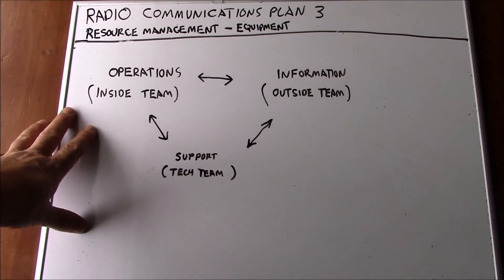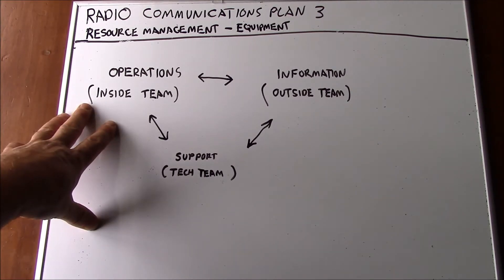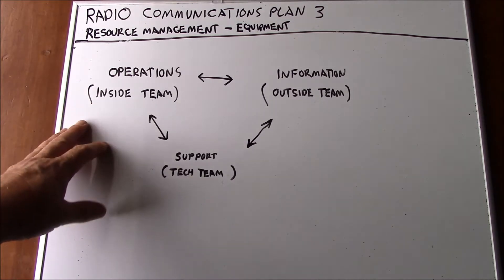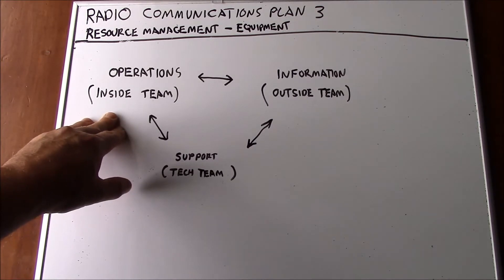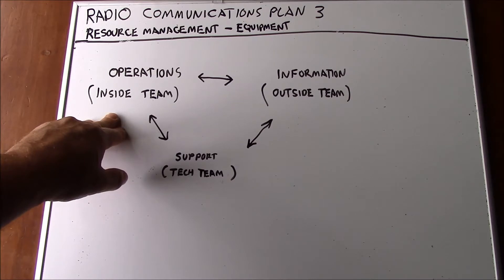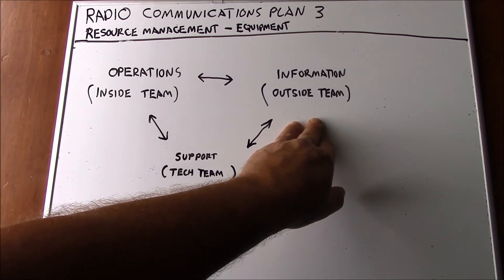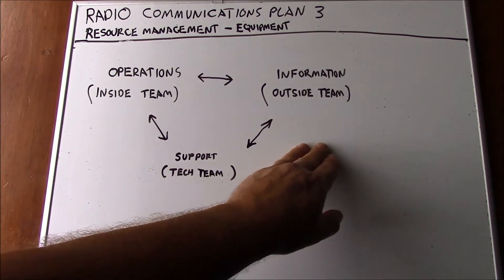To begin with, we'll summarize the structure of the communications unit itself. This doesn't necessarily have to be an organization — it could also be an individual acting in all these roles. The operations element is the inside team, responsible for creating the communications plan, placing it into action, and operating the equipment on a day-to-day basis. The information element is the outside team, devoted to bringing information in and building situational awareness.